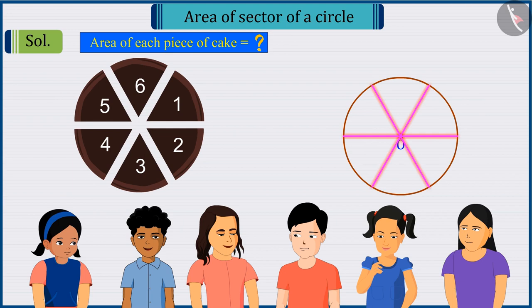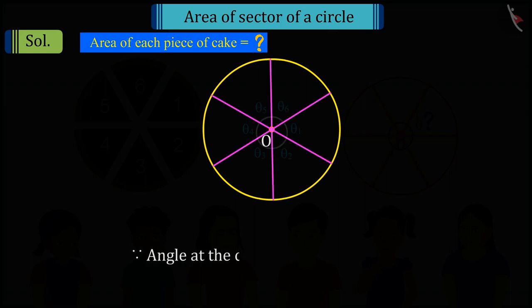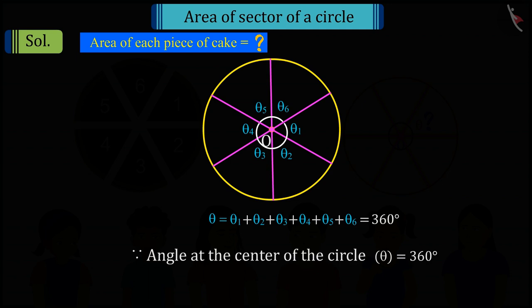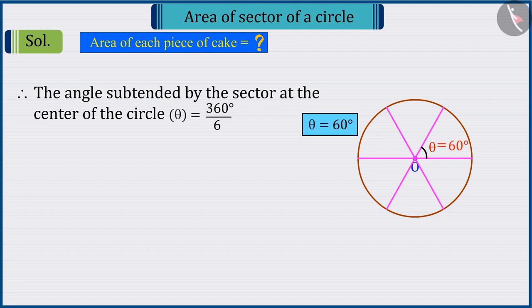Can you tell, what will be the angles subtended by these sectors at the centre? Absolutely correct, because we know that the sum of the total angles at the centre of a circle is 360 degrees, and we are dividing the cake into 6 sectors.